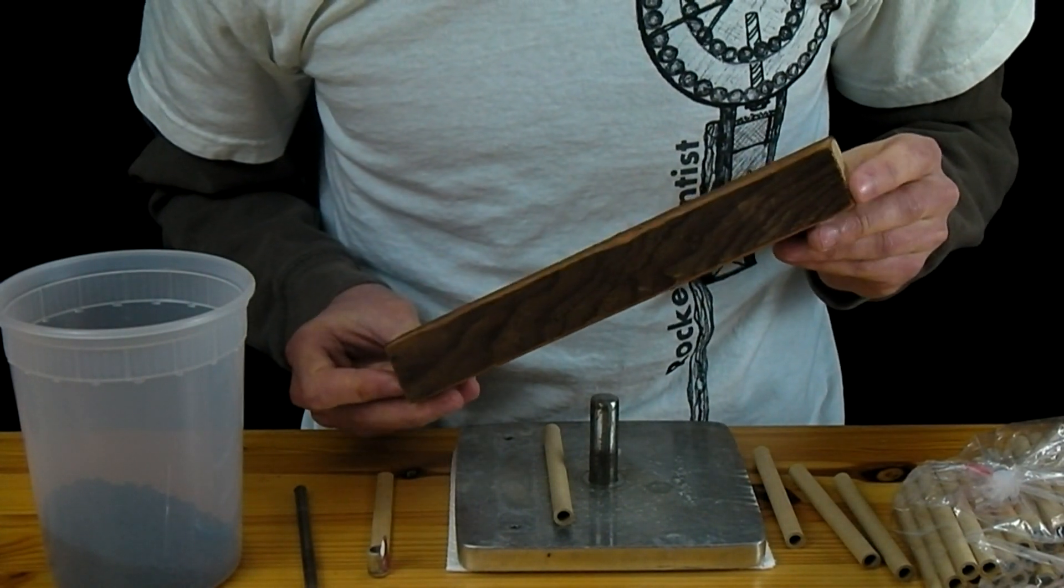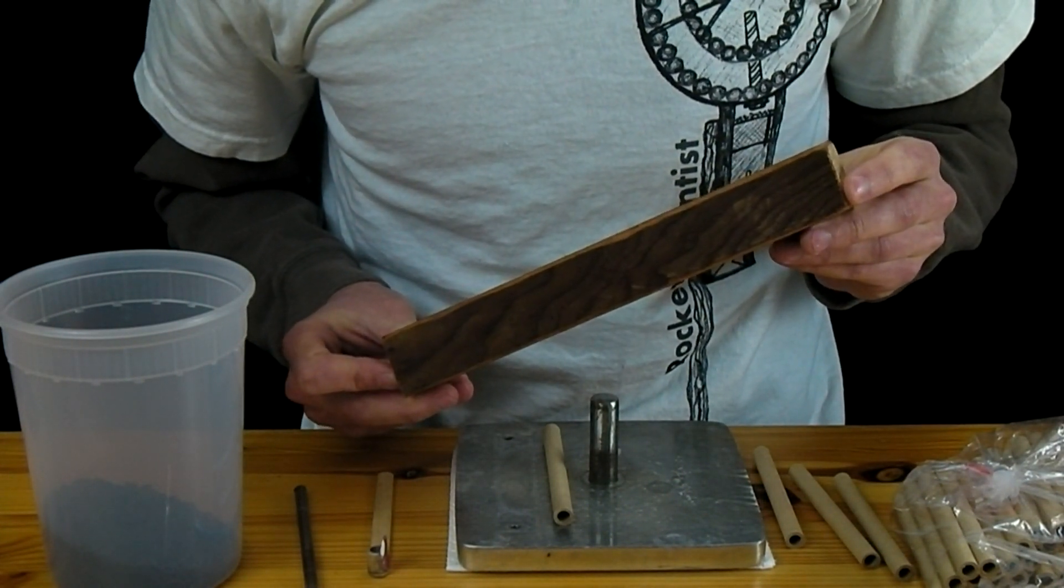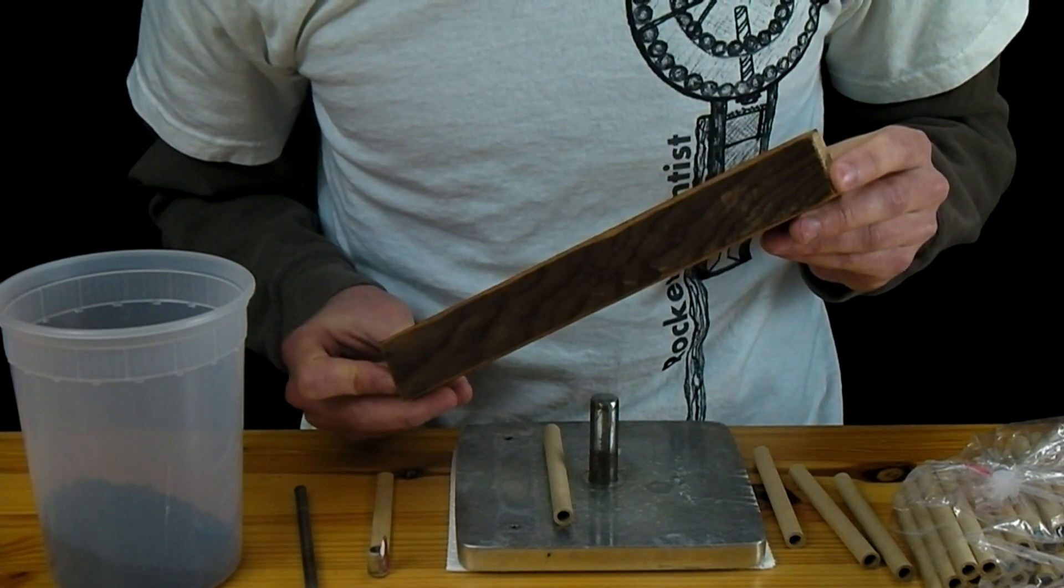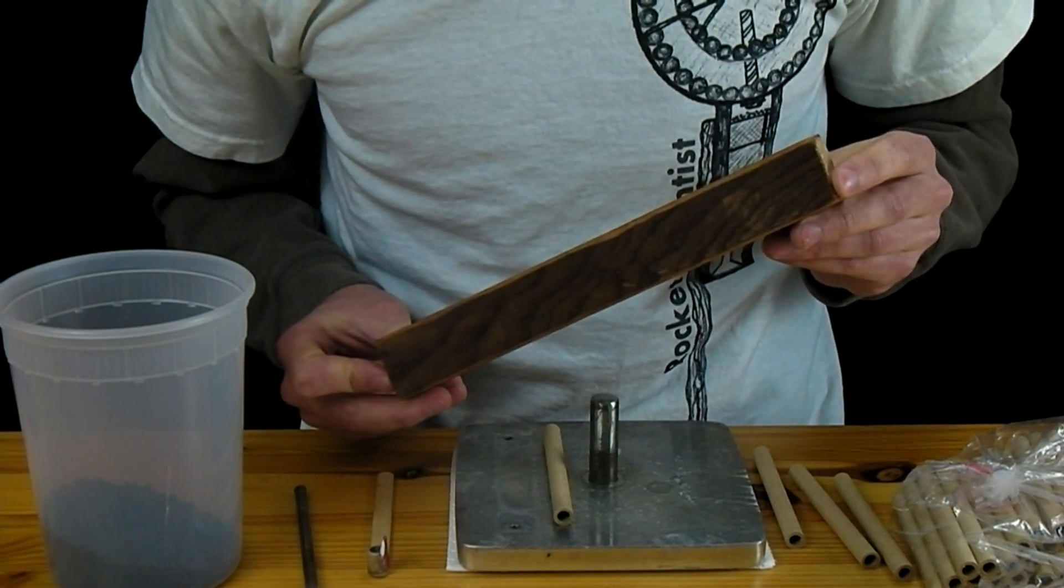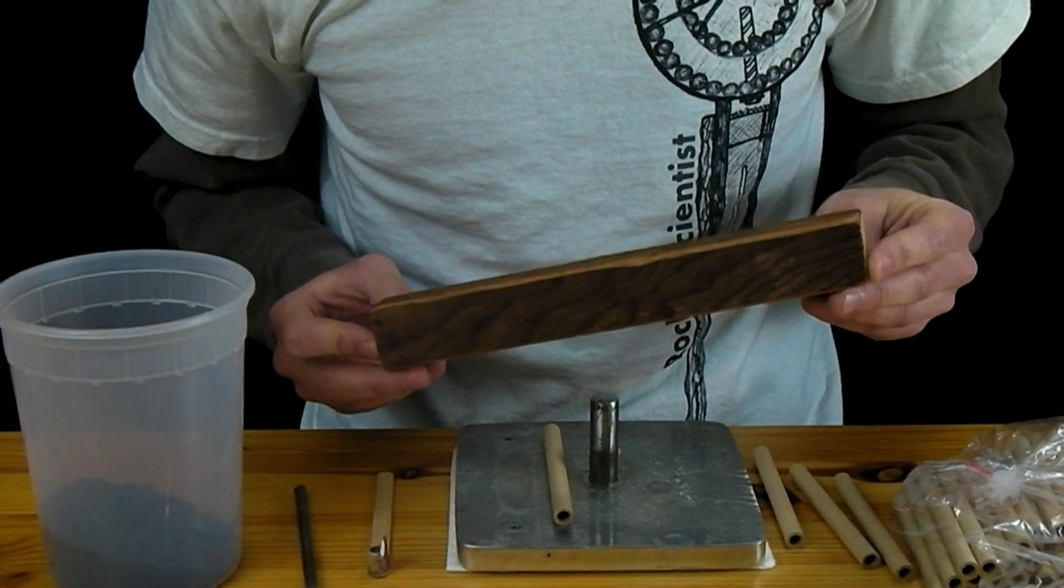So what I'm going to try to do with this is give consistent blows to each increment. Maybe four or five a piece but always the same number to try to keep the same consistency in the density of the grain.